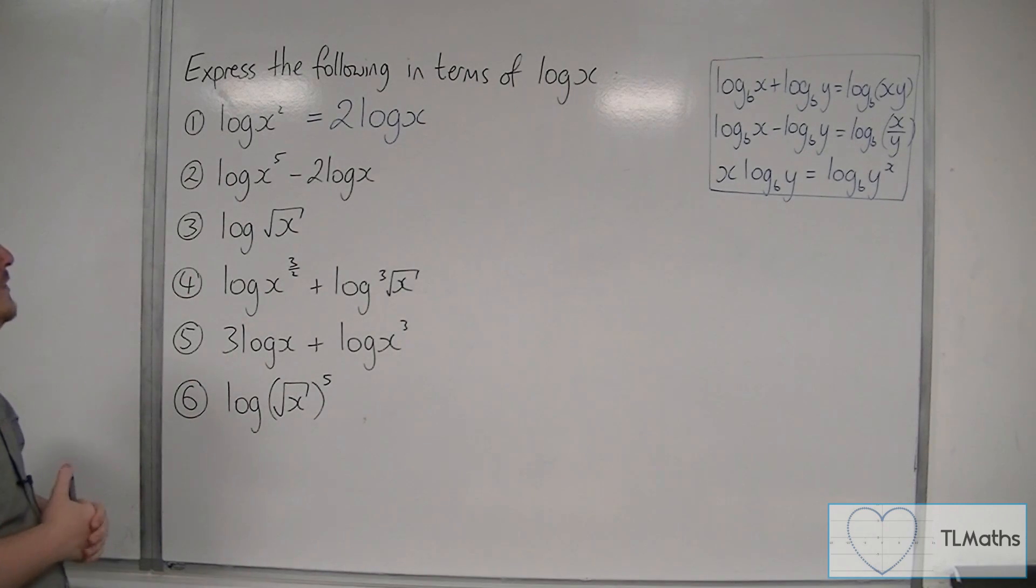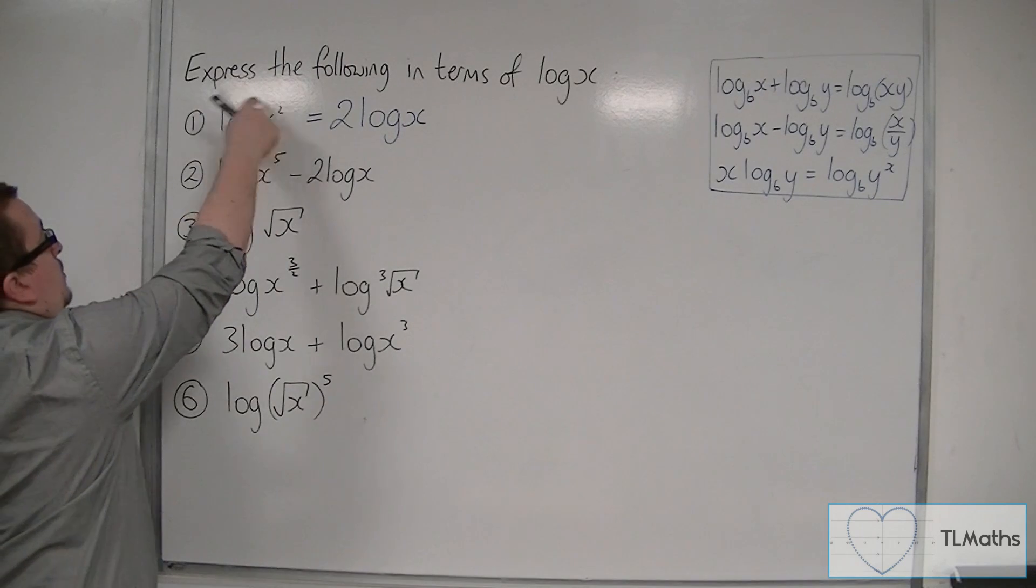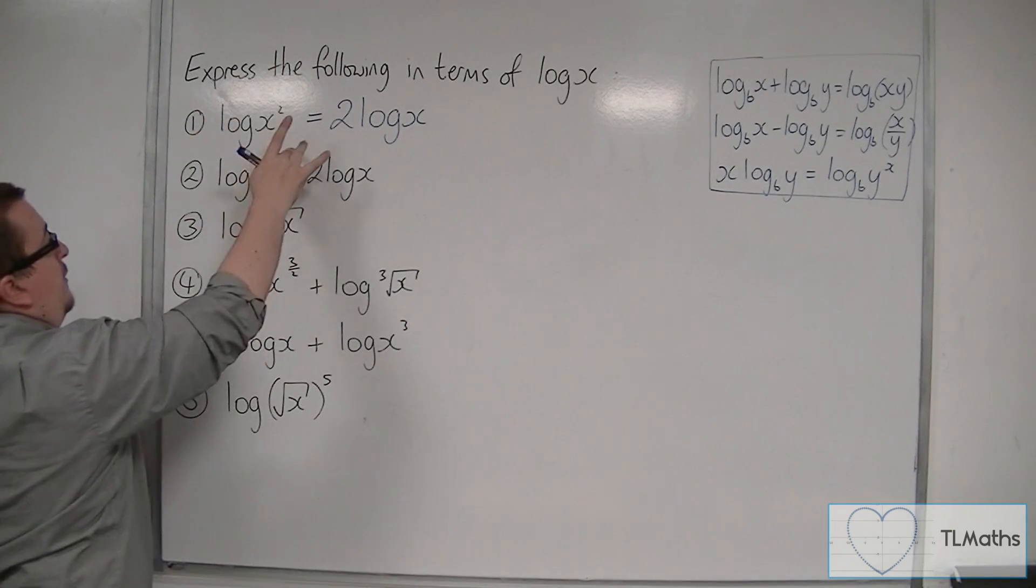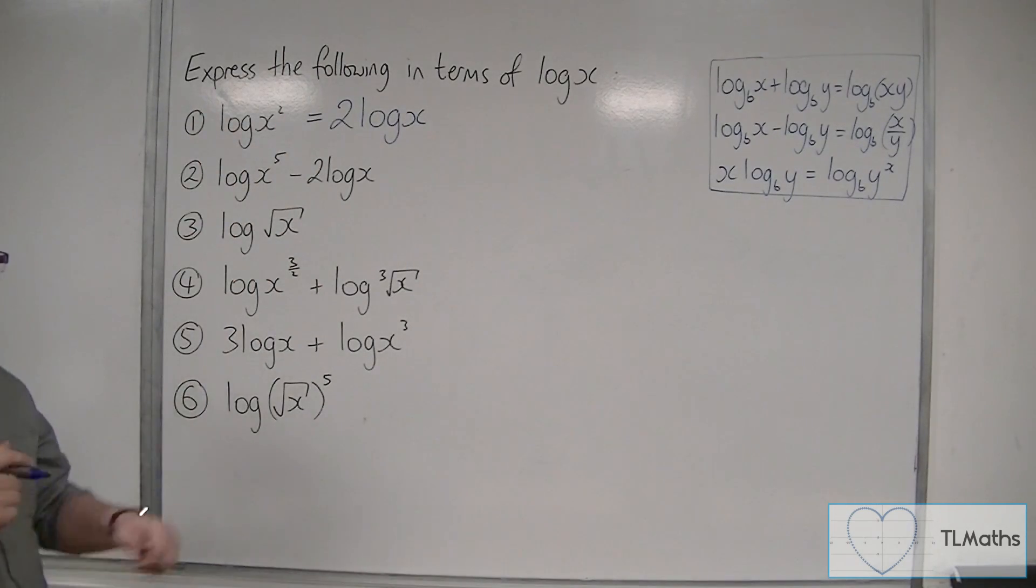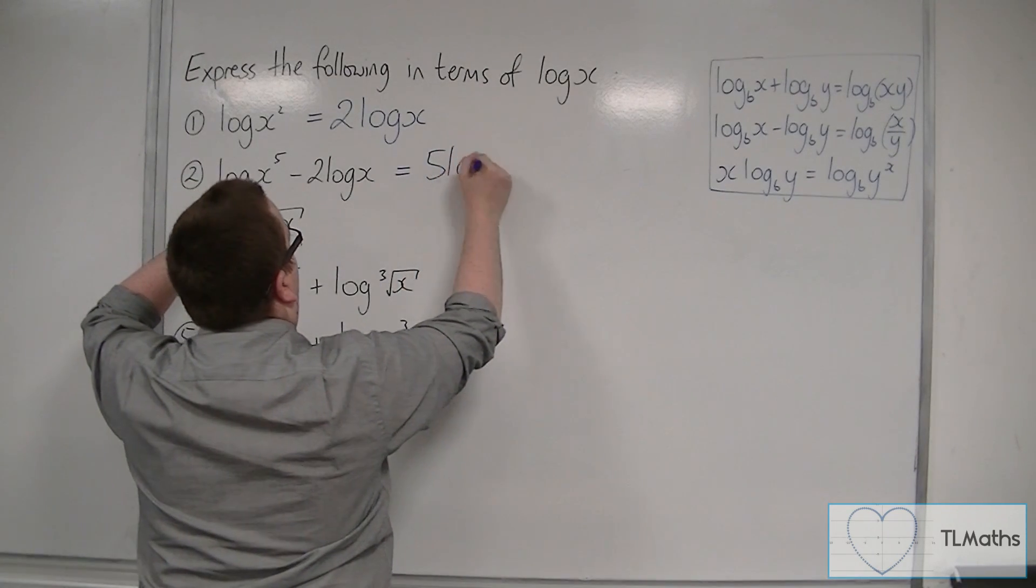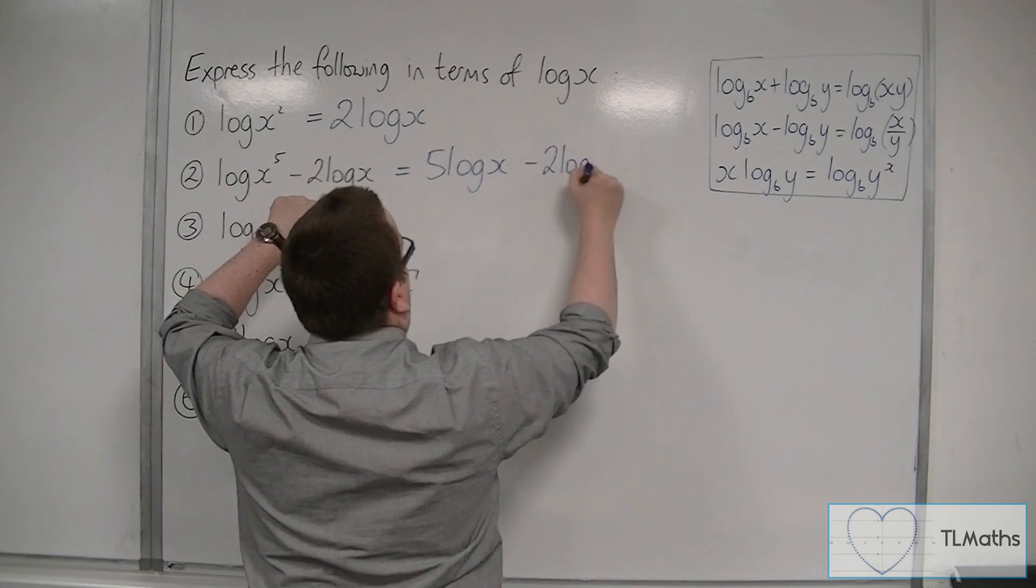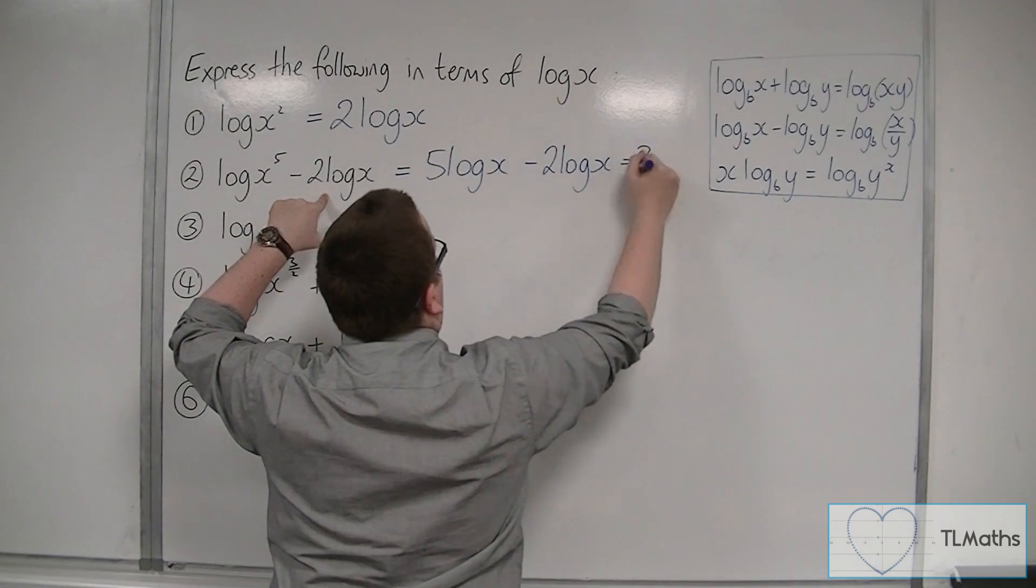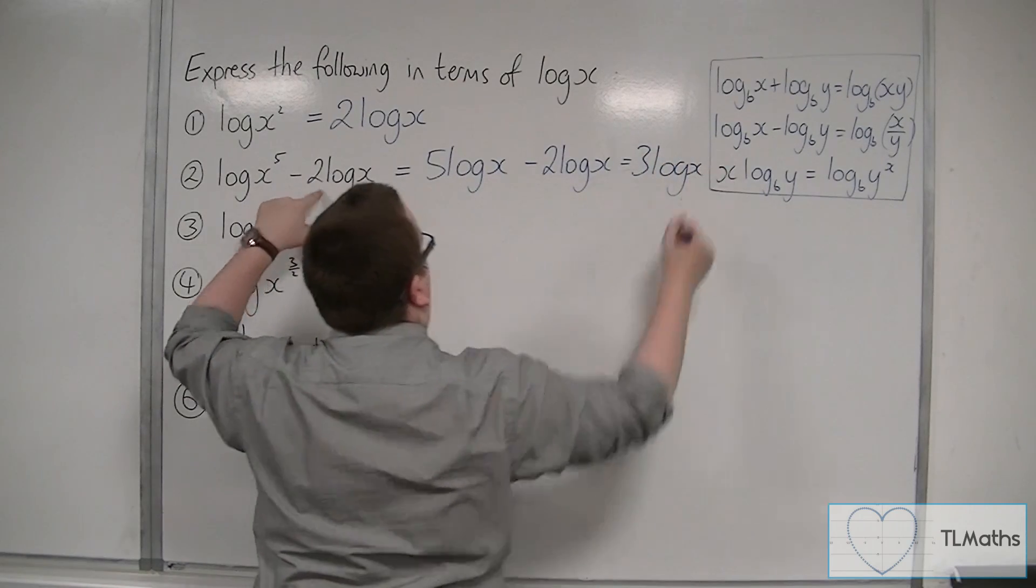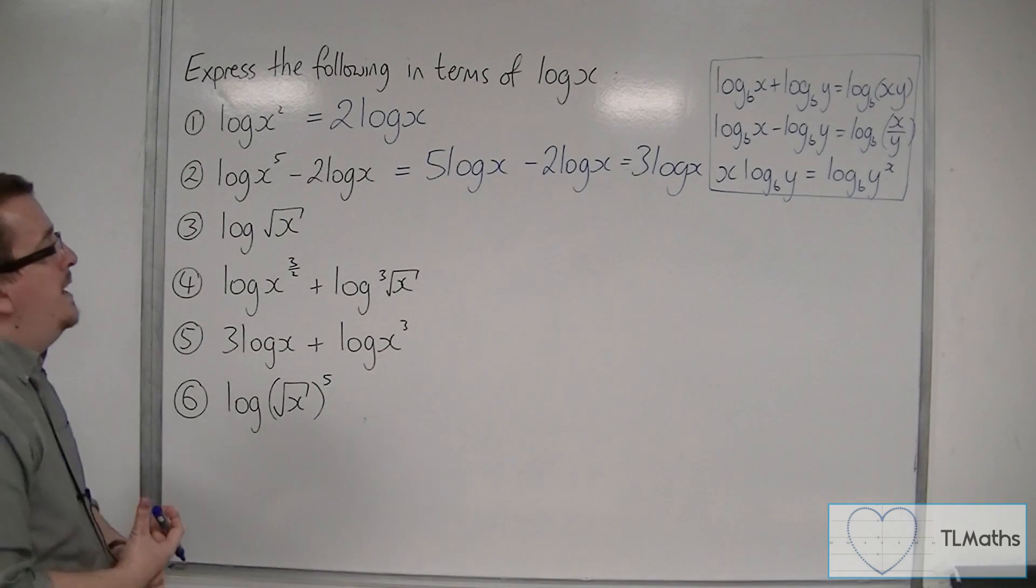Let's have a look at the second one, log of x to the five, take away 2 log x. As that two came down to the front in the first example, the five can come down to the front of this first term here. So we have 5 log x, take away 2 log x. Well, that's just going to leave 3 log x. If I've got five somethings and I take away two somethings, I have three somethings left.